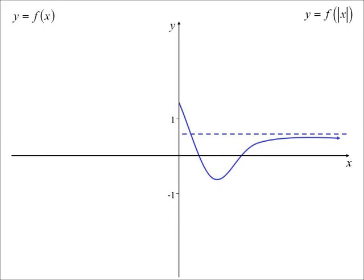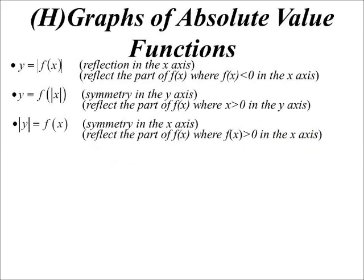Whatever is on the right gets reflected over, because when we substitute in negative one we get the same answer as when we substitute in positive one, and when we substitute in negative two we get the same answer as positive two. We're always substituting in the absolute value, so we're always substituting in positive numbers, and that right side reflects over.